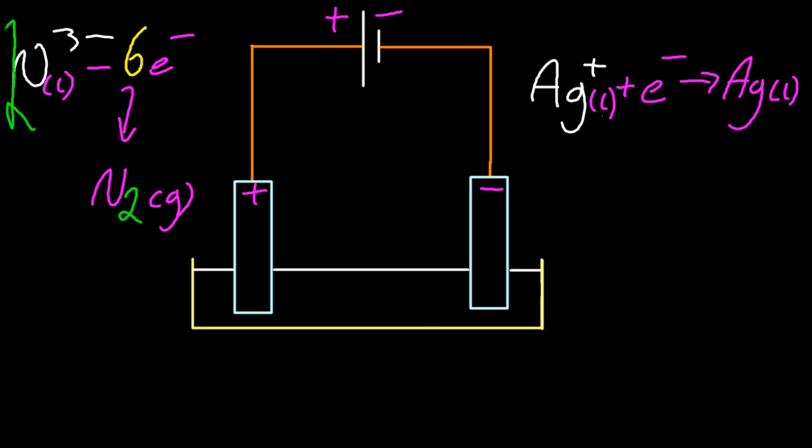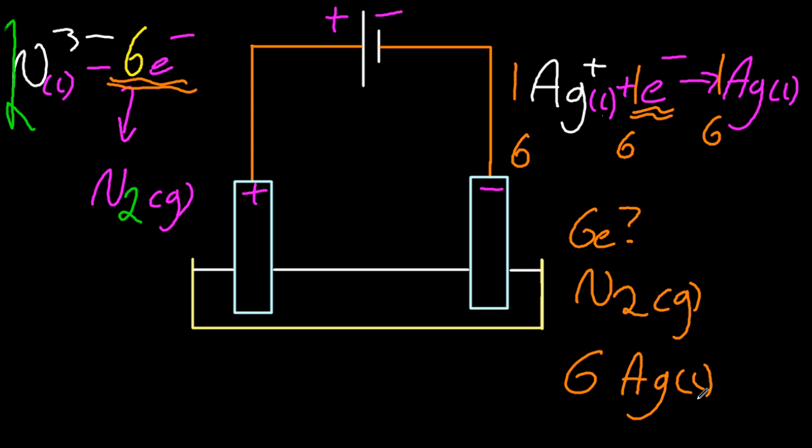So, an evil question that you might be asked is, let's say there's six electrons. How many silver atoms are going to be made? And how many nitrogen molecules? Well, I'm going to make one molecule of nitrogen. And by balancing that, it looks like I'm going to make six atoms of silver.